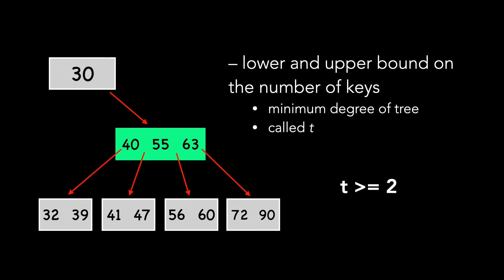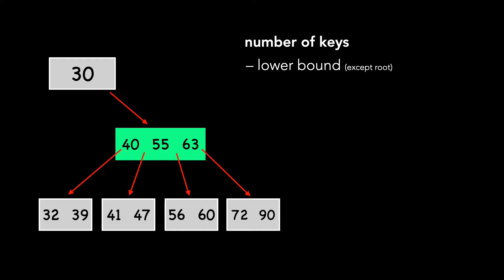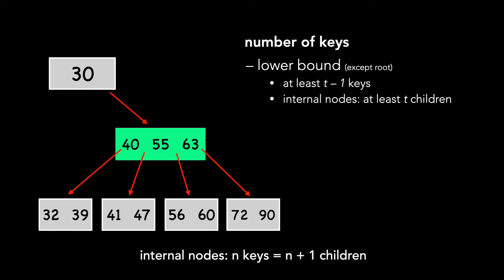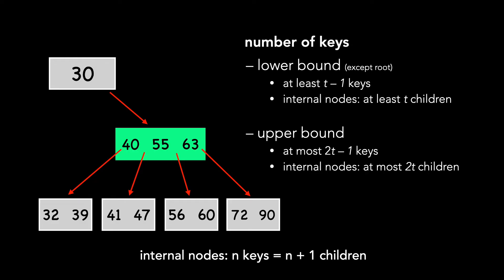T must be greater than or equal to 2 for B-trees. For the lower bound, every node except the root has at least T minus 1 keys, and every internal node except the root has at least T children, given our formula that a node with N keys has N plus 1 children. For the upper bound, every node may have at most 2 times T minus 1 keys, meaning internal nodes have at most 2 times T children.